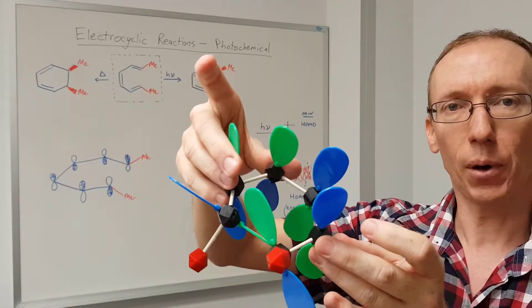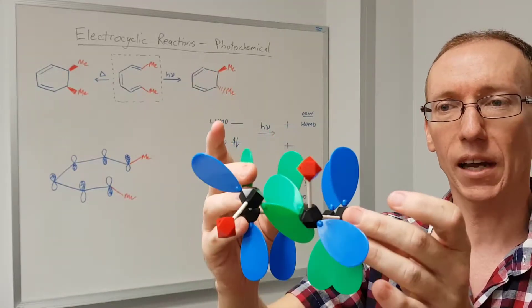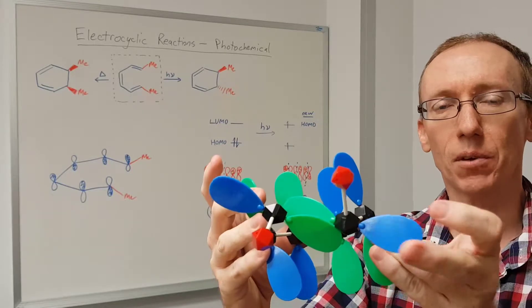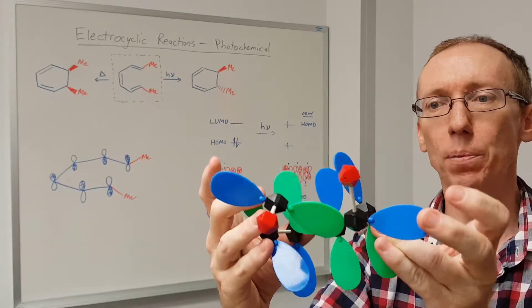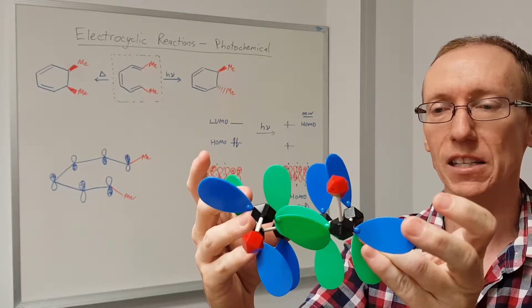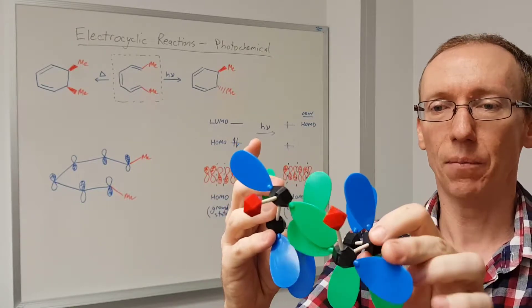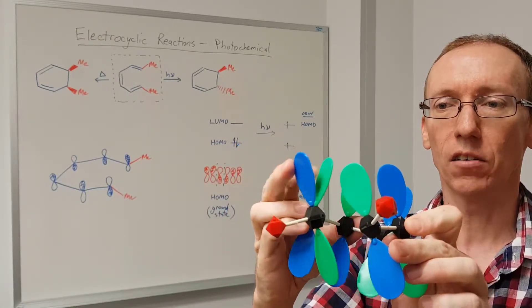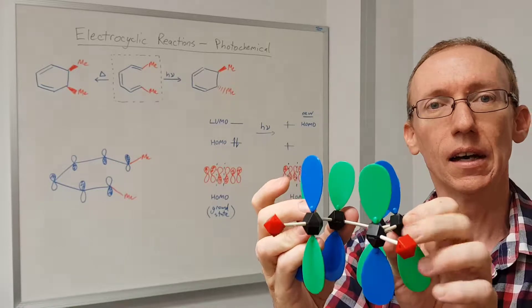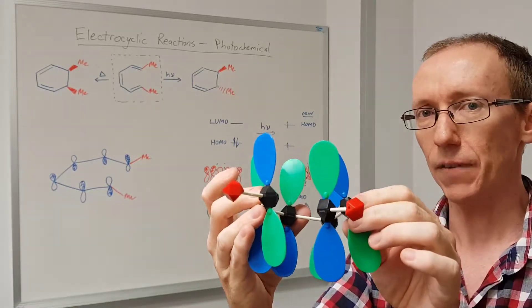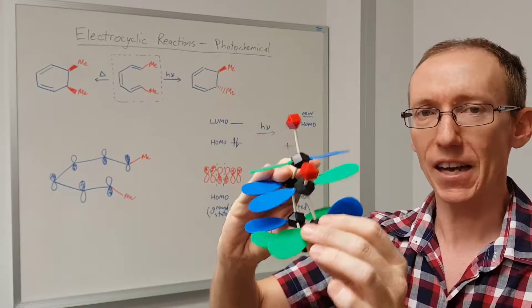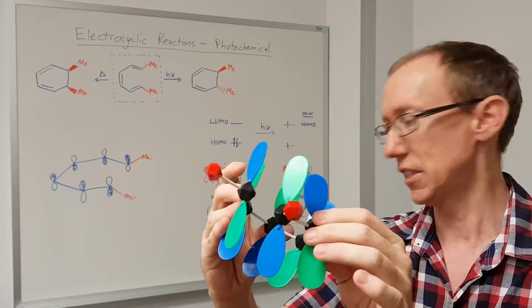Now, if we go both clockwise, we're going to get one enantiomer. If we make them go both anticlockwise, we'll get the opposite enantiomer. And because I've got an achiral starting material here, they're both equally energetically favorable. So we'll get both enantiomers in equal amounts, and so we'll get a racemic mixture.